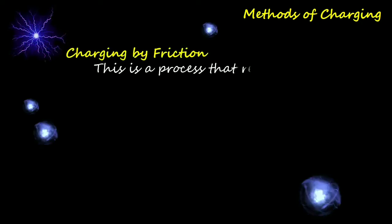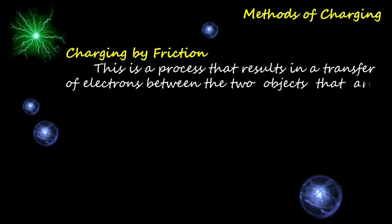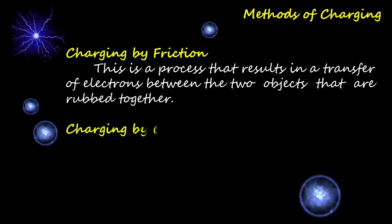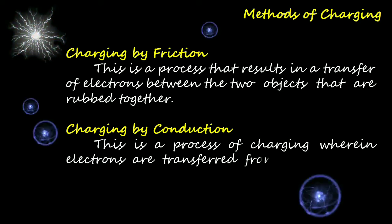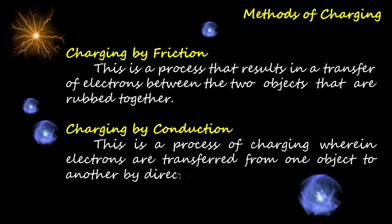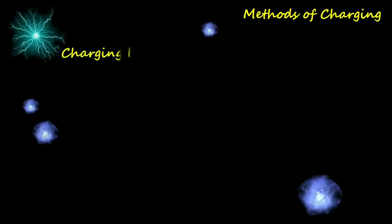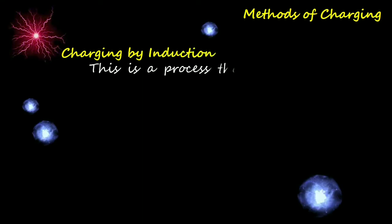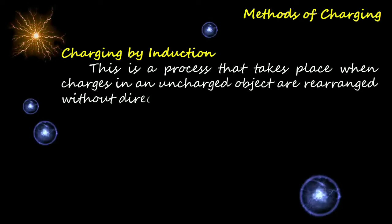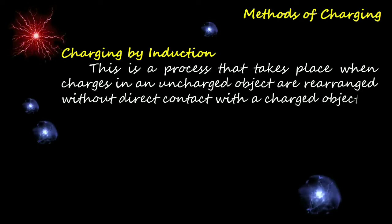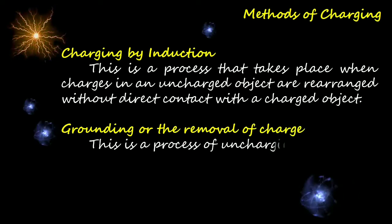Charging by friction is a process that results in a transfer of electrons between two objects that are rubbed together. Charging by conduction is a process wherein electrons are transferred from one object to another by direct contact. Charging by induction takes place when charges in an uncharged object are rearranged without direct contact with a charged object. Grounding, or the removal of charge, is a process of uncharging.